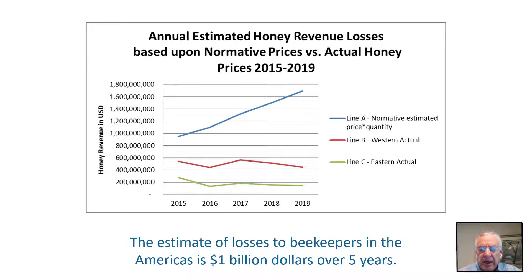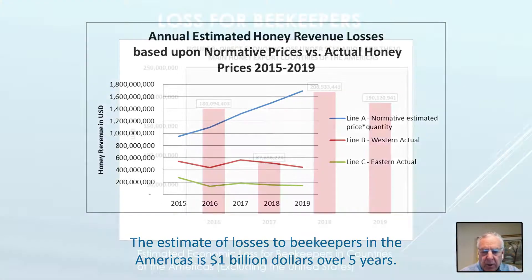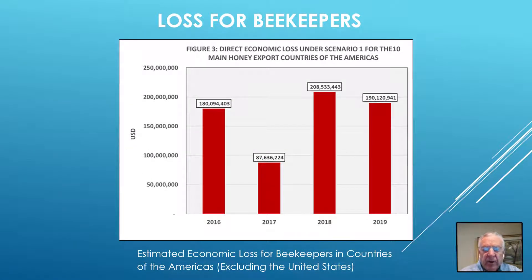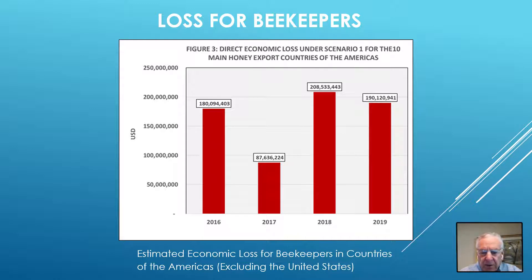The annual estimated honey revenue losses based upon normative prices versus actual honey prices are illustrated in this chart. A similar calculation was presented in my article in the American Bee Journal in June 2020, showing comparable prices for American beekeepers over the past four years. The committee studying food fraud in Apimondia, representing the World Congress of Beekeepers, issued a report describing the plague of adulteration as the greatest damage to beekeepers in the history of beekeeping, with economic damages to authentic honey producers of approximately one billion dollars.